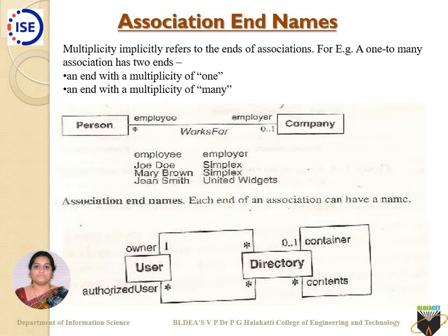A class diagram — whenever you are representing a particular class, it consists of three different sections. One happens to be the class name, the second one happens to be the data types, that is the data members, and the third section of the rectangular box contains the member functions of that particular class.